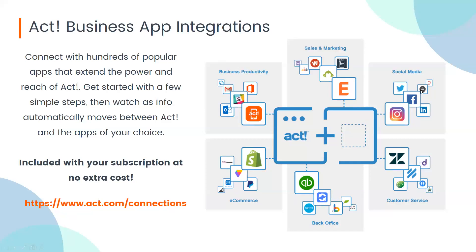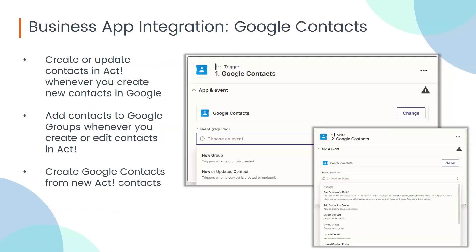Today we're going to talk about ACT connections through Zapier. I'll show you how you can easily move your data between ACT and any of the business apps you use every day. There are actually thousands of connections available inside Zapier, and this is all included within your subscription at no extra cost. You can go to act.com/connections to view all the different connections available between ACT and anything else out there.